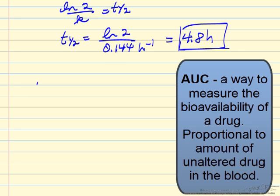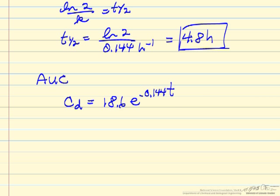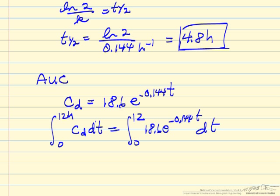The last part of this problem is what's the area under the curve. So the concentration of the drug is its initial concentration e to the minus 0.144 times T. So if we wanted to integrate over this timescale, zero to 12 hours, of the concentration, so this is the concentration of the drug times dT. So the integral from 0 to 12 of 18.6 e to the time dependence. And of course, the integral of this exponent is just an exponent.